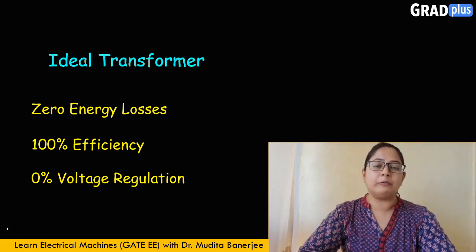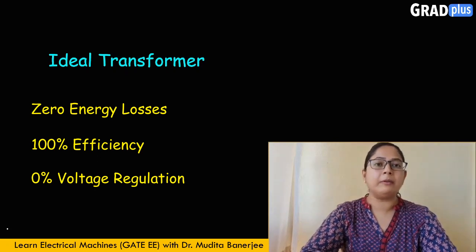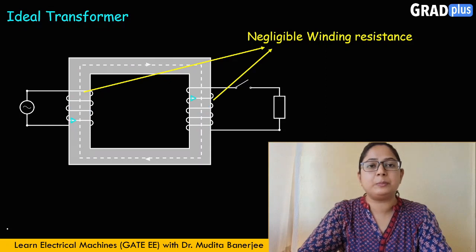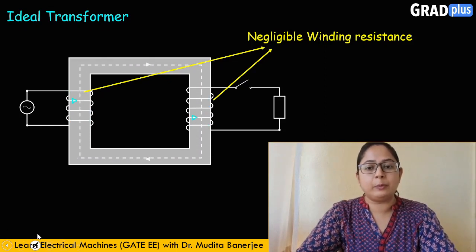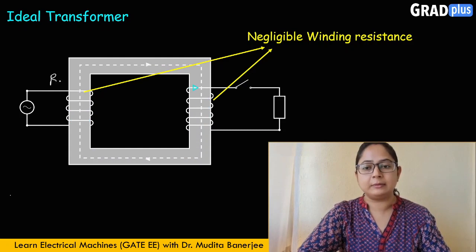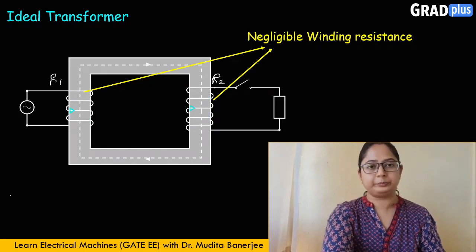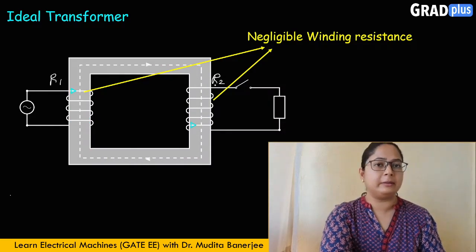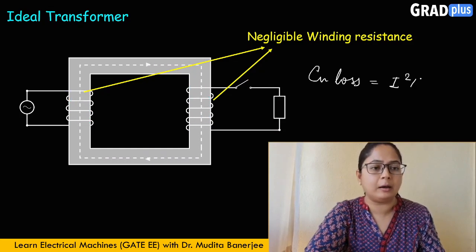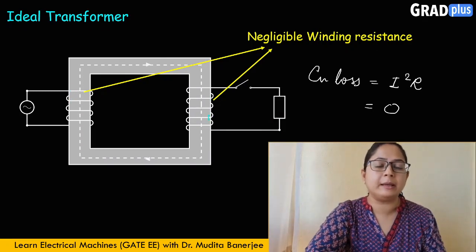The fundamentals of a transformer remain the same; only the losses are present in the practical transformer. The first difference is winding resistance. There are two windings — primary and secondary. For the primary side, resistance R1 equals 0, and on the secondary side, R2 equals 0. With zero winding resistance, the copper loss — which equals I²R — is also equal to 0, meaning there is no copper loss taking place in the windings.